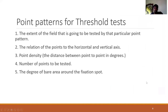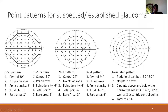Point patterns are divided into multiple types based on five criteria: the extent of field tested, the relation of the points to the horizontal and vertical axis, the point density (distance between two consecutive points in degrees), the total number of points to be tested, and the bare area around fixation where there will be no points. Point patterns used for glaucoma suspects or early established glaucoma are mainly the 30-2, the 24-2, and the nasal step. The most commonly used are the 30-2 and the 24-2.